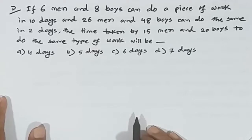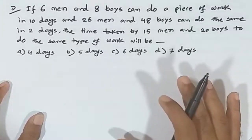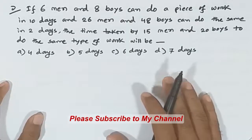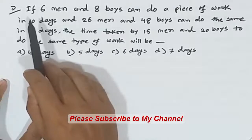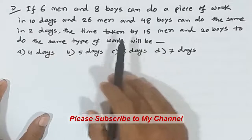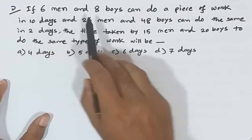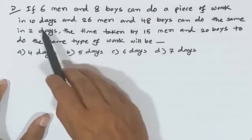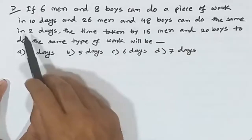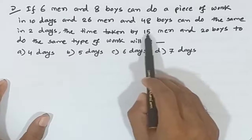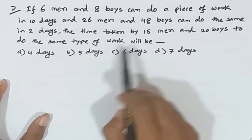We are going to discuss IBA questions conceptually. First problem: if 6 men and 8 boys can do a piece of work in 10 days, and 26 men and 48 boys can do the same work in 2 days, how many days will it take 15 men and 20 boys to do the same type of work?